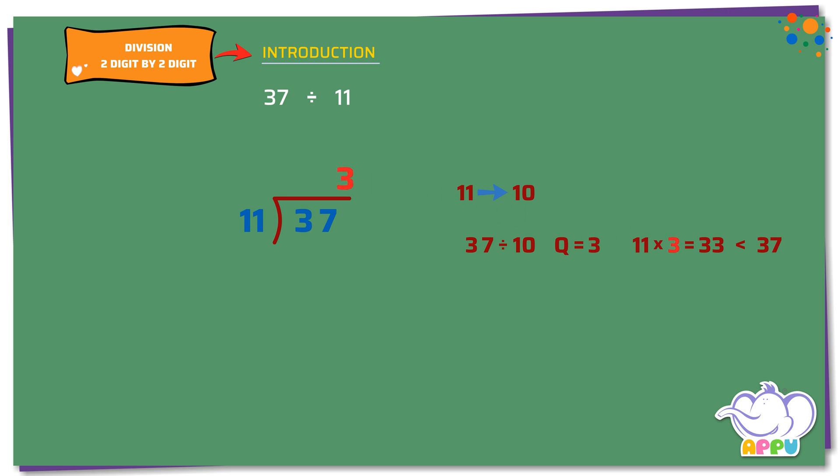So, it takes 3 11s. Step 2: We multiply 11 and 3. We get 33.